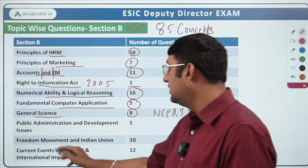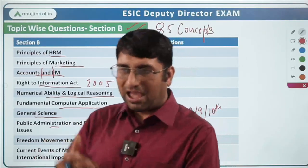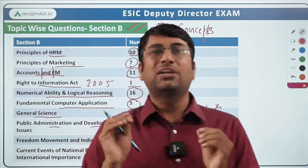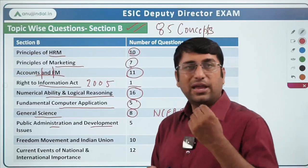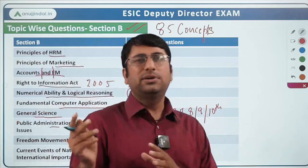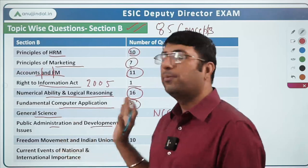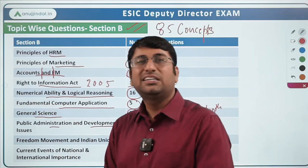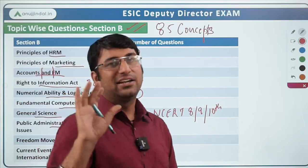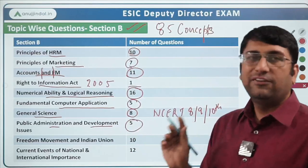Next topic is Public Administration and Development Issues. From having a look at these questions, I felt that if you are preparing Economic and Social Issues for RBI Grade B, that syllabus is more than sufficient. It covers basic development issues and basic government schemes with respect to development — static section content. 5 questions were asked from this, not a very difficult thing to achieve.